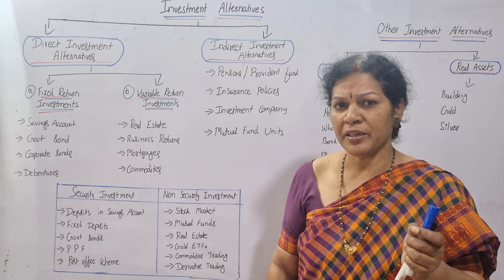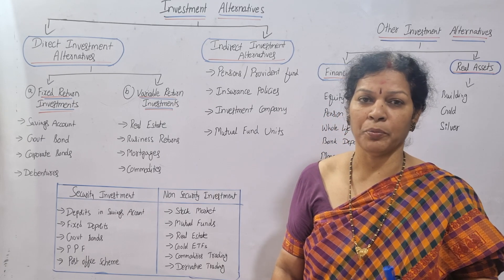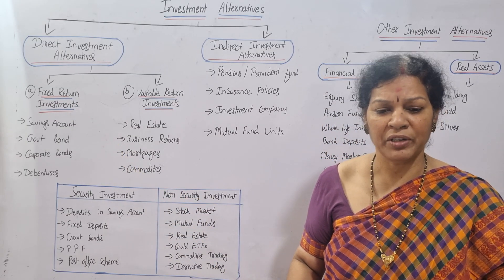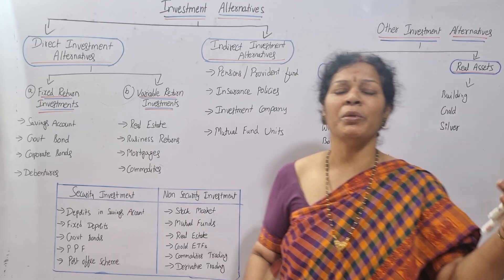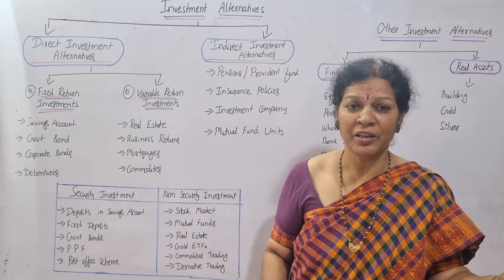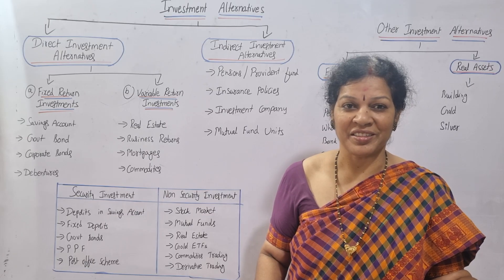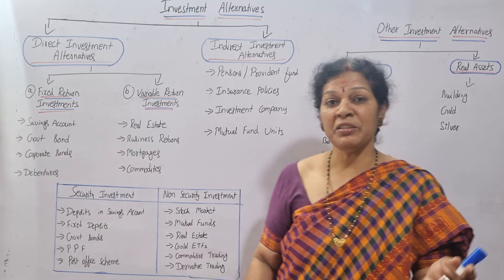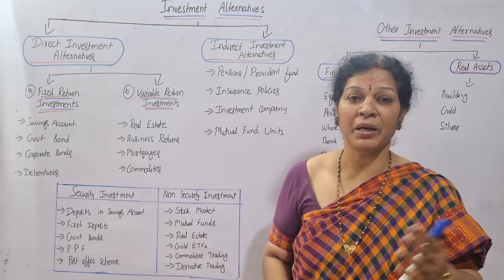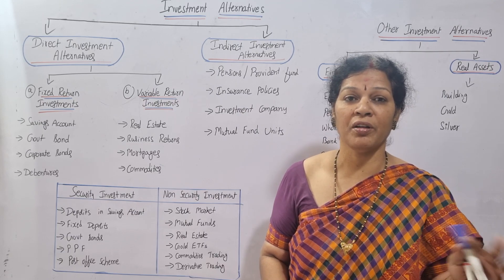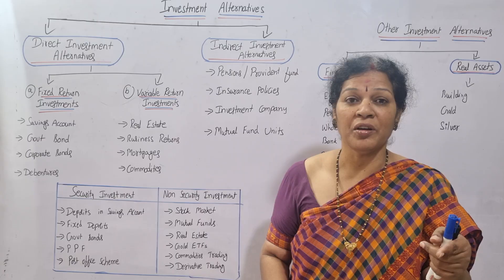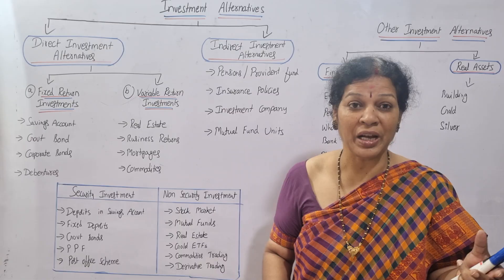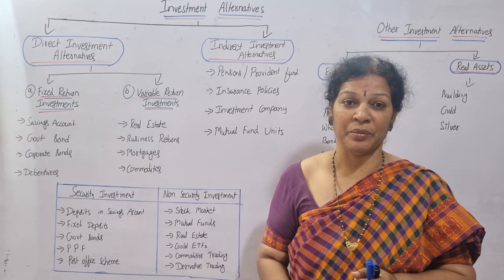Direct investment alternatives can again be divided into two parts. One is fixed return investment — there's no change at all. Every month or every year you know how much you have invested and what return you're going to get, no variation. The other is variable return investment — it fluctuates, it depends on the market, the situation, and the company's profits or losses. The return is not consistent; it may vary, and you can't expect a constant amount all the time.